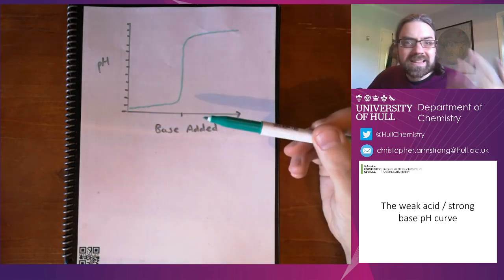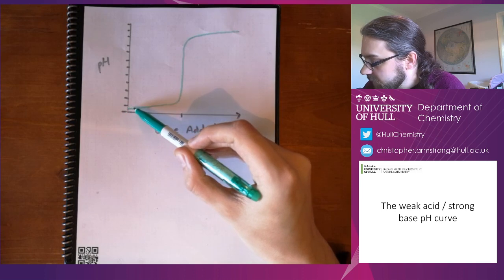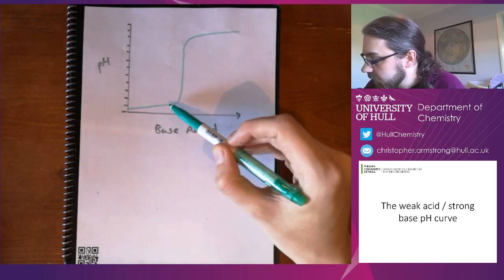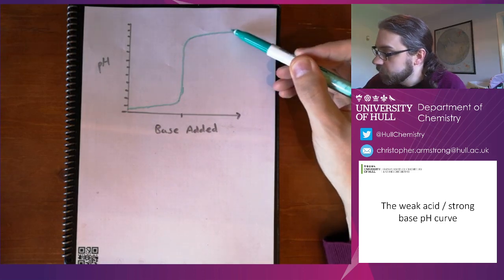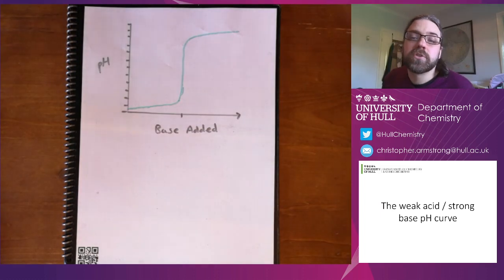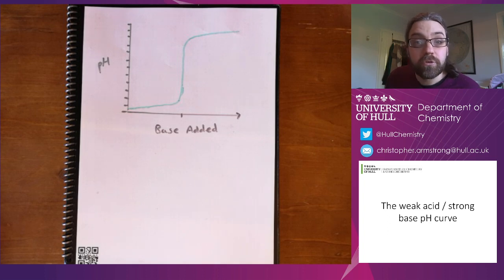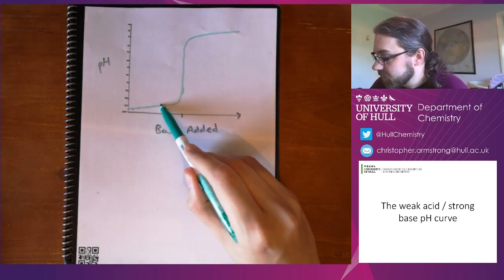This is the standard acid-base titration curve. We start at a low pH, we add base, we keep adding it, and then suddenly there's a really quick jump in pH up to basic conditions, and then it levels out again. And that shape is the consequence of the logarithmic nature of pH. A log is effectively the size of the number, it gets you the order of magnitude of it.